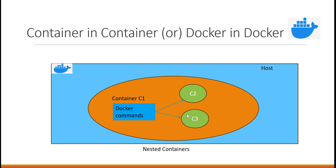We have three containers: C1, C2, and C3. We will create container C1 using the Docker DinD image. When we create a container from the Docker DinD image, it will have all the required libraries and utilities which allow us to create containers within the container. That means when we execute Docker commands, the images we build or containers we create will be created inside container C1. Let us see in the demo how we will create containers C2 and C3 within container C1.